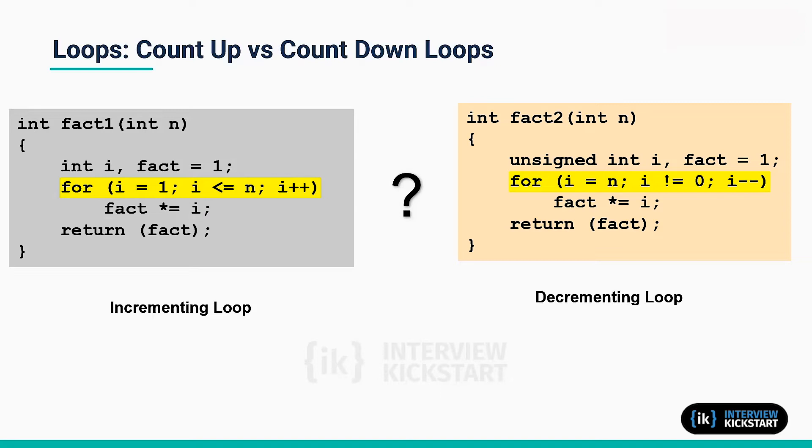Usually decrementing loops, that is the one on the right side, happen to generate better code. Why? This is because in the assembly code there will be a branch back based on a comparison of the loop termination condition.